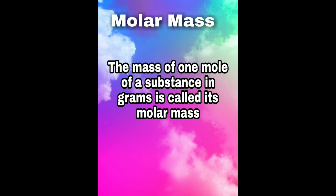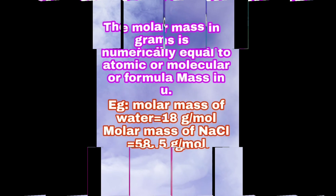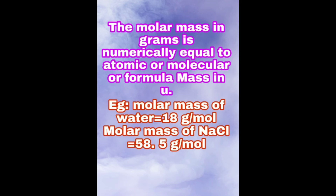What do you mean by molar mass? It is the mass of 1 mole of substance in grams. The molar mass in grams is numerically equal to the atomic, molecular, or formula mass in U. For example, the molar mass of water is 18 grams per mole, since the molecular mass of water is 18u. Another example: the molar mass of sodium chloride is 58.5 grams per mole, since the formula mass of sodium chloride is 58.5u.